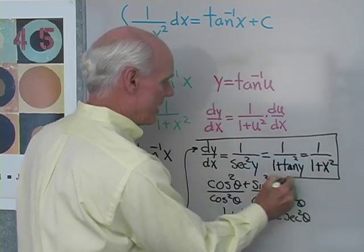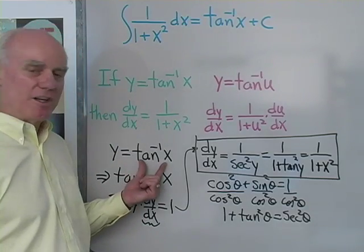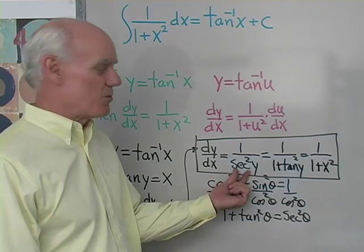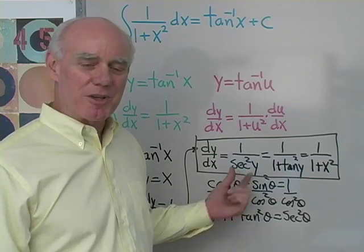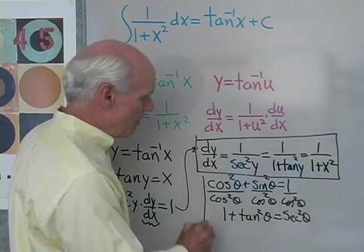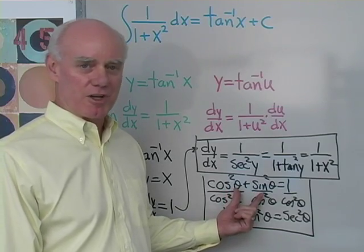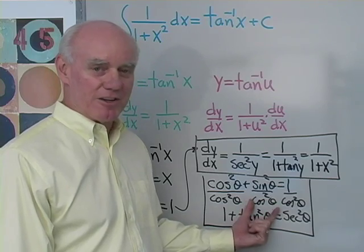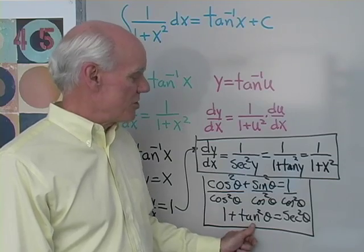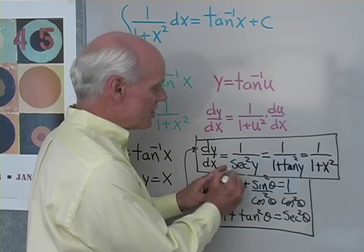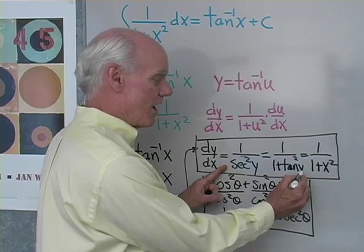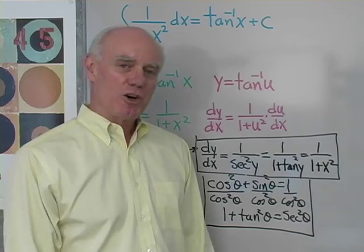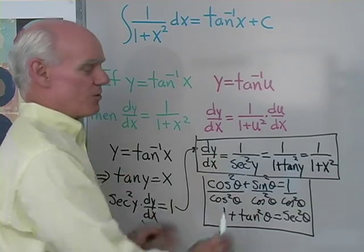That's where the derivative formula comes from. If y equals inverse tangent x, then tangent y equals x. Differentiate implicitly, solve for dy dx to get 1 over secant squared y. Since that's in terms of y, use the Pythagorean identity: cosine squared plus sine squared equals 1. Dividing by cosine squared gives 1 plus tangent squared theta equals secant squared theta, allowing substitution back to get 1 over 1 plus x squared.